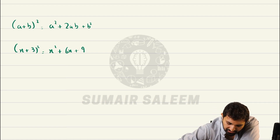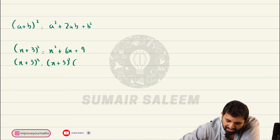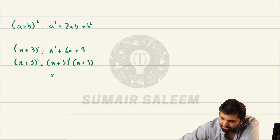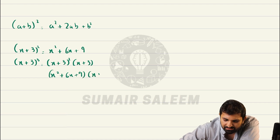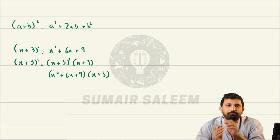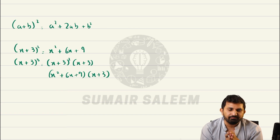But if I expand x plus 3 to the power cube, I can easily manage this by writing x plus 3 squared times x plus 3, and I can easily expand this to get x squared plus 6x plus 9 times x plus 3. But if the power is 4 or 5 or 6, we need a better method.